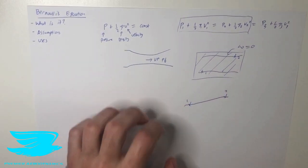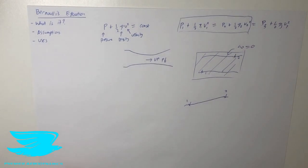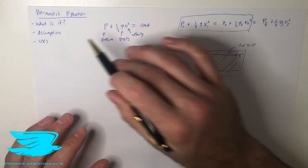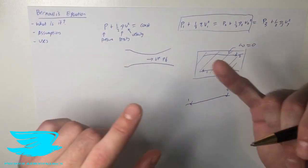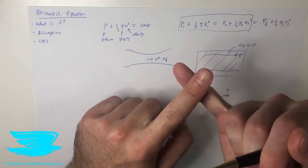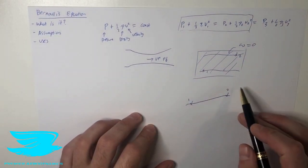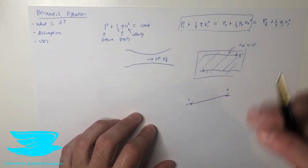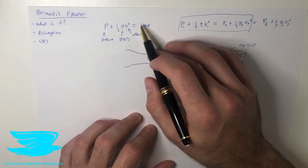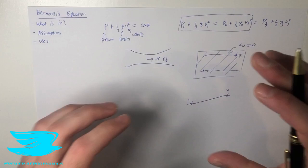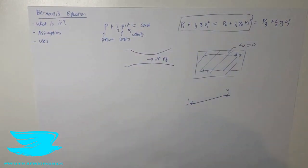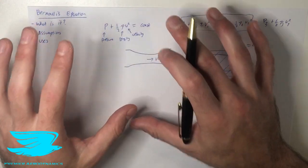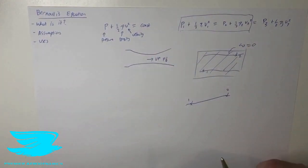So those are some assumptions. If any of these assumptions are not holding true — so if the flow isn't incompressible, or if the flow is not irrotational and we try to apply it to different points along different streamlines — then this equation will break down. There are other ways to use this equation with different assumptions, for example if the flow is compressible, but this is the most basic and fundamental form used throughout aerodynamics.